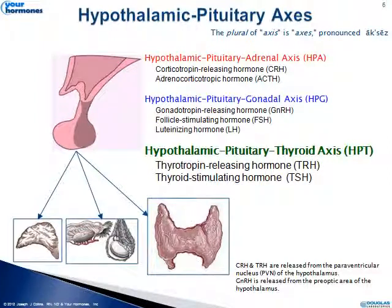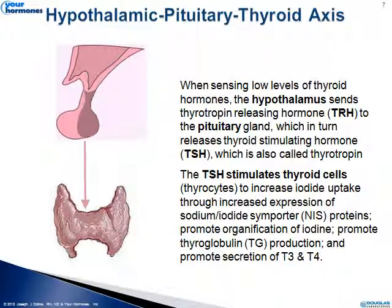Once the body recognizes a change in thyroid hormone levels, the hypothalamus — specifically the paraventricular nucleus — is going to secrete thyrotropin-releasing hormone, and that in turn is going to cause the pituitary gland to release thyroid stimulating hormone. The hypothalamus releases thyrotropin-releasing hormone when it senses low thyroid hormone levels circulating in the body, and in turn the pituitary gland sends out TSH. The most important part of this is what TSH actually does — it goes to the thyroid cells and performs a number of specific actions.